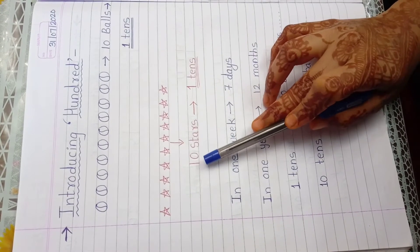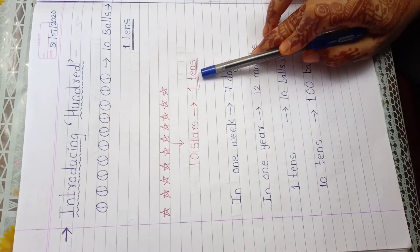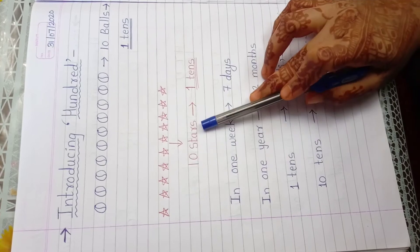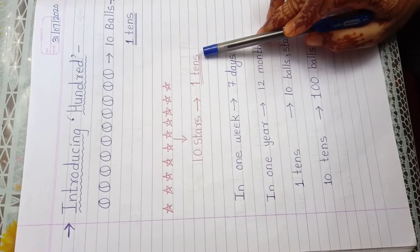If there will be 20 stars, then we will write how many tens? 2 tens. If 30 stars are there, then we will write 3 tens. Okay. Understand?